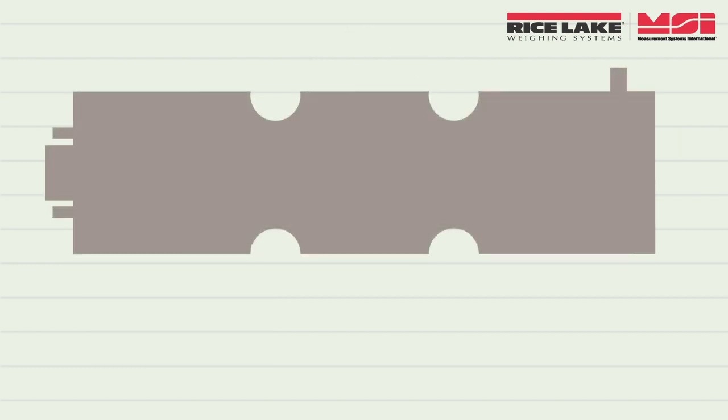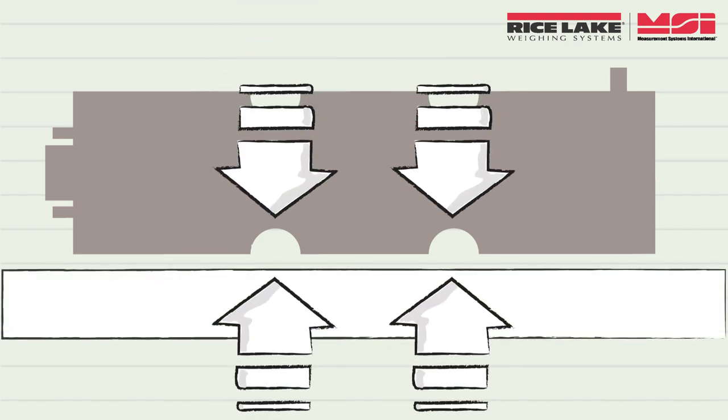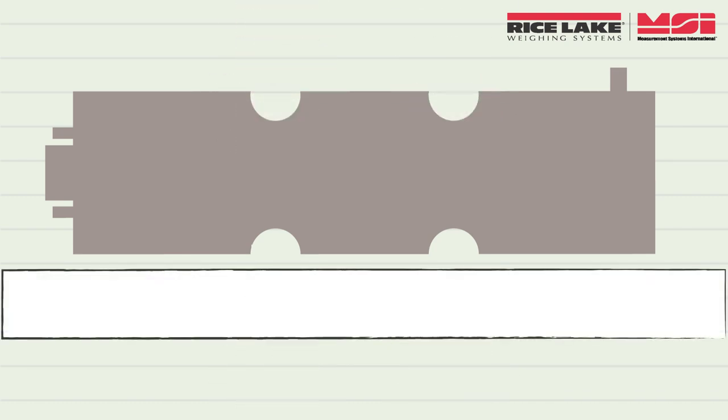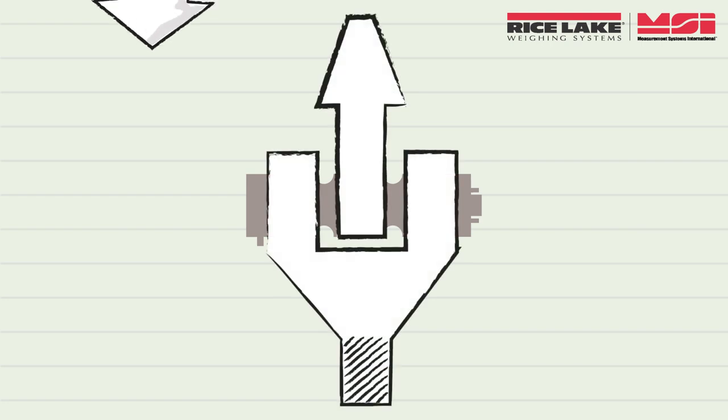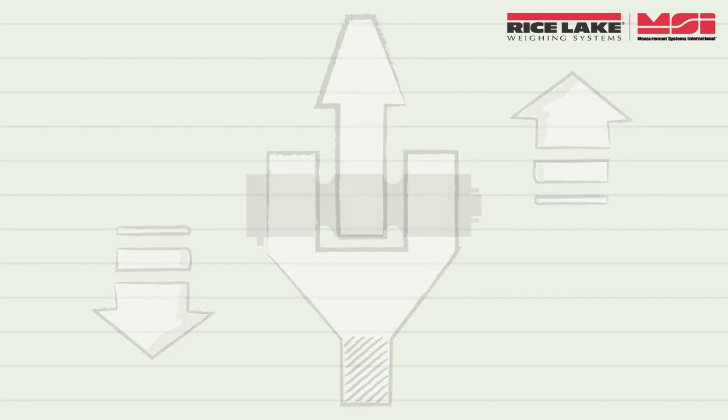The load pin exterior has two grooves defining the area of the pin between measured forces. The lug or sheave applies pressure in one direction, while the fixed support applies pressure in the opposite direction.